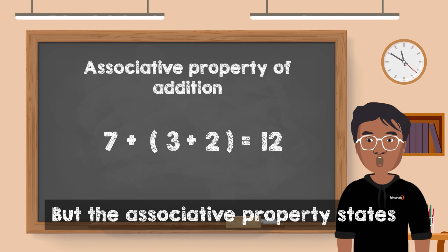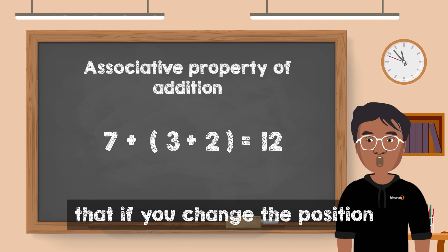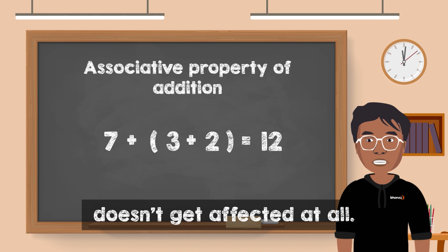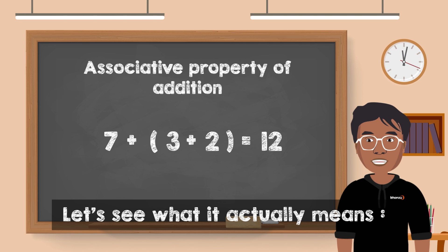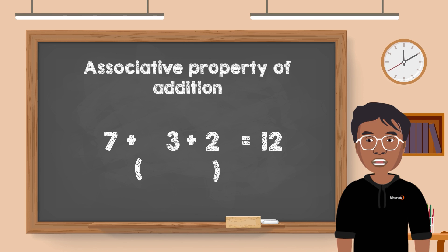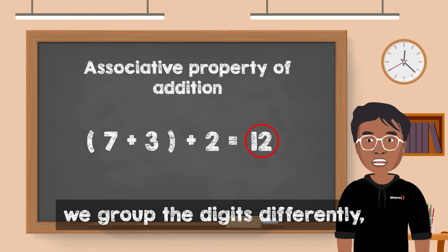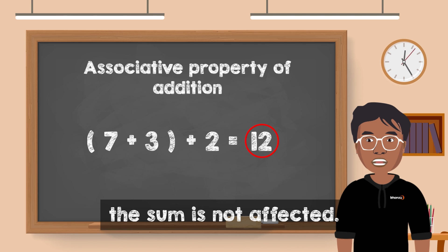But the associative property states that if you change the position of the parenthesis, the total sum doesn't get affected at all. Let's see what it actually means. 7 plus 3 inside the bracket plus 2 is equal to 12. This means that even if we group the digits differently, the sum is not affected.